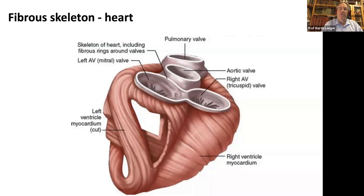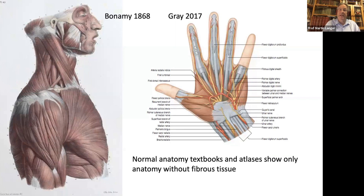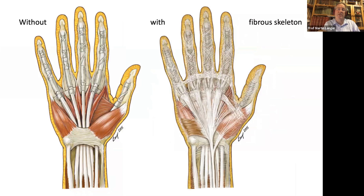The term 'fibrous skeleton' comes not from the hand but from the heart — specifically the area where the valves of the heart are located. The fibrous skeleton of the hand is something different, and you can't find it in normal anatomy textbooks or atlases of anatomy. They show only anatomy without the fibrous tissue; the fibrous tissue is always removed and you can't see it.